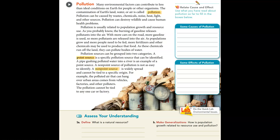Pollution sources can be grouped into two categories. A point source is a specific pollution source that can be identified — for example, a pipe gushing polluted water into a river. A non-point source of pollution is not as easy to identify; it is widely spread and cannot be tied to a specific origin. If a factory is the only one in an area and the waters have sludge, that's a point source — we know where it came from and we can fix it.